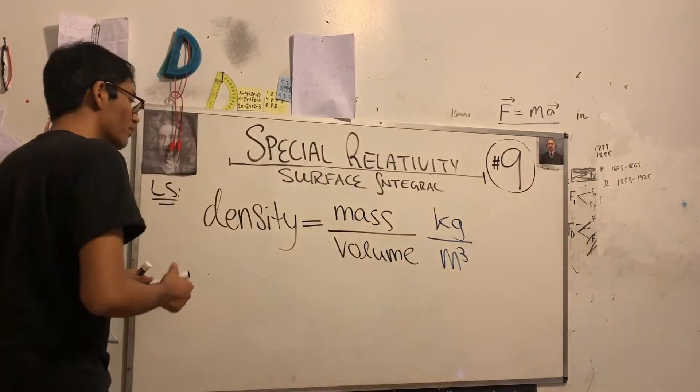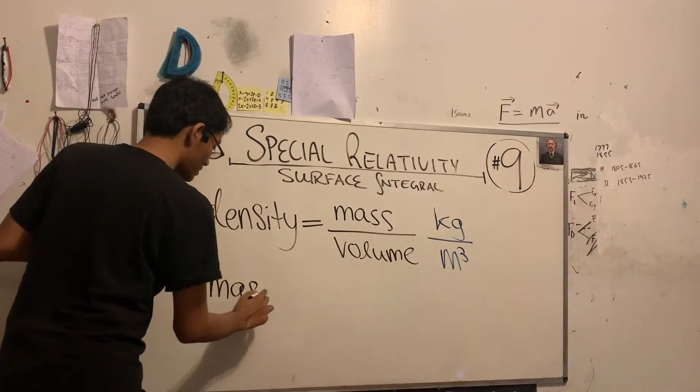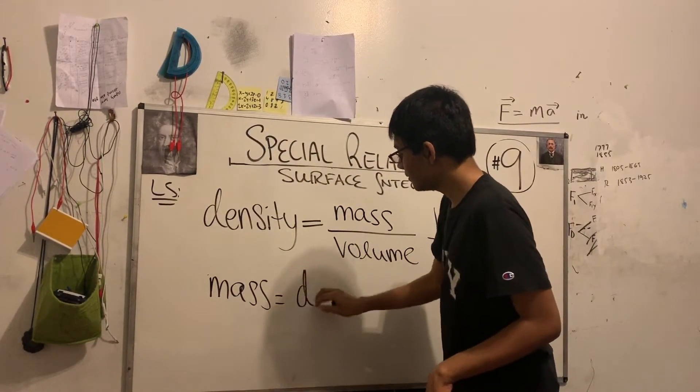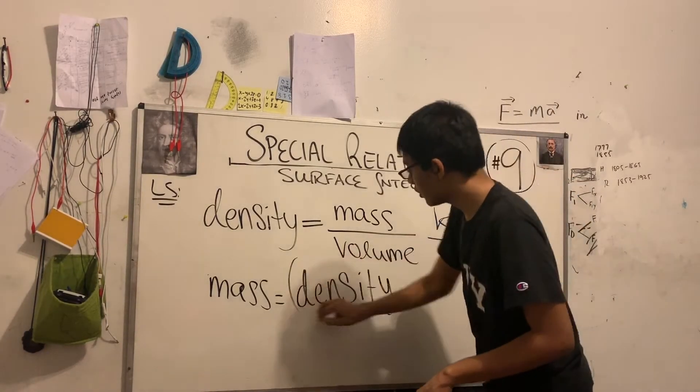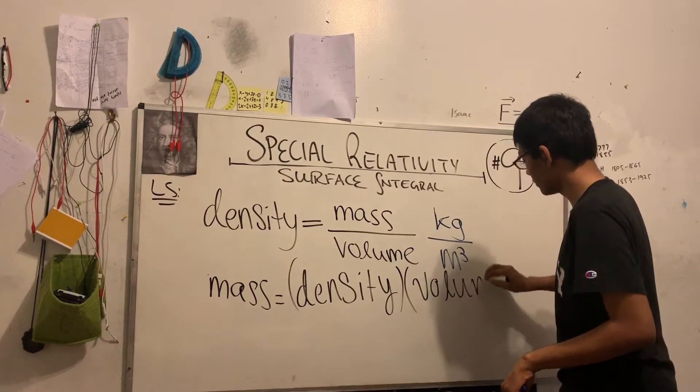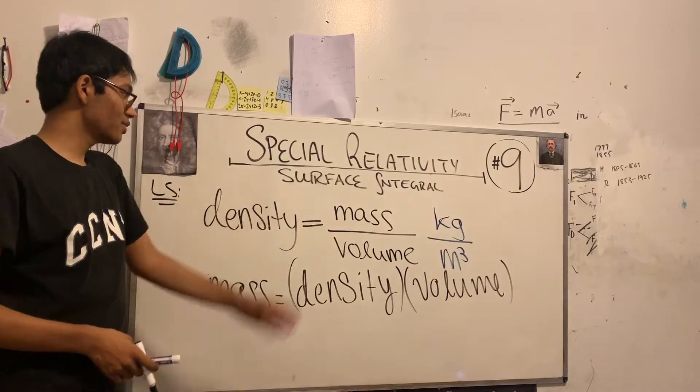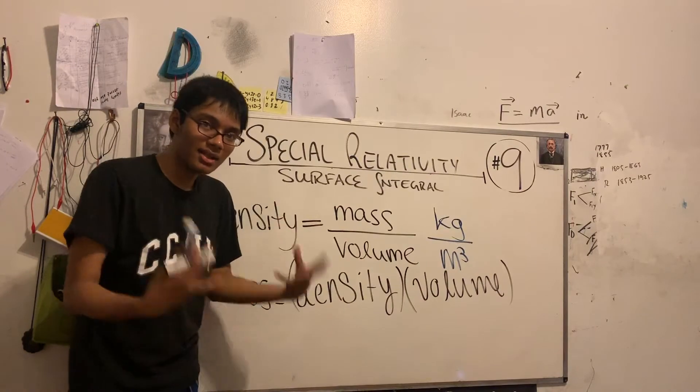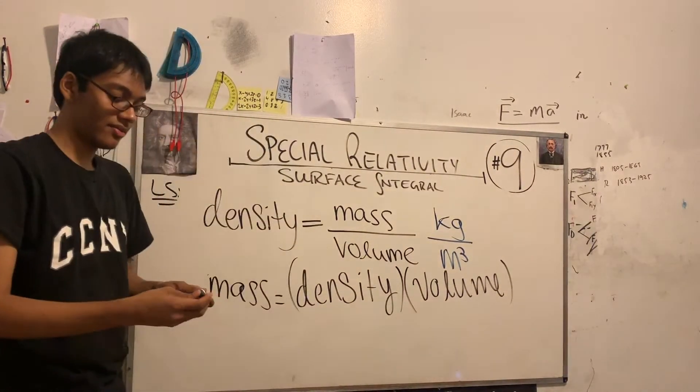So let's solve for mass. The mass of any given region or object is going to be the product of its density times its volume. And that makes sense because mass is measured in kilograms, and density is measured in kilograms per cubic meters, and volume is cubic meters. So naturally, you will get mass as a product.